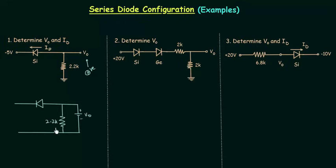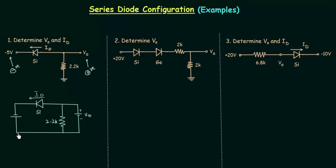This is 2.2K Ohms. In the same way we need to determine the polarity of minus 5 volts — this is negative. So I will connect the negative terminal to the N side of the diode. This is the silicon diode; Id is the current flowing through the diode. This is how this circuit will look when you include the potential differences instead of potential at a point.